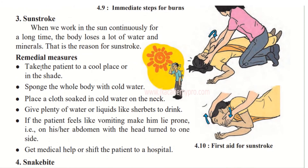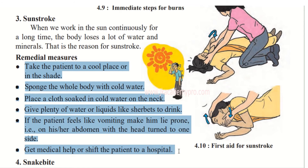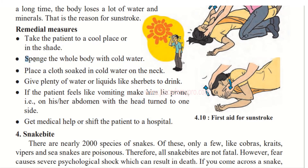Now let's understand sunstroke and the remedial measures we can do when a person is affected by sunstroke. When we work in the sun continuously for a long time, the body loses a lot of water and minerals, and that is a reason for sunstroke. As a student you may go out in the sun on a field trip or play games outside; standing in the heat causes sweating, so the body loses water and minerals, leading to sunstroke. Take the patient to a cool place or in the shade — under a fan, a tree, or a shed.